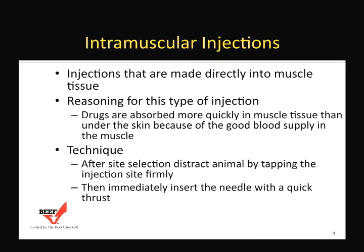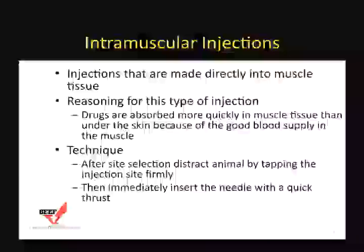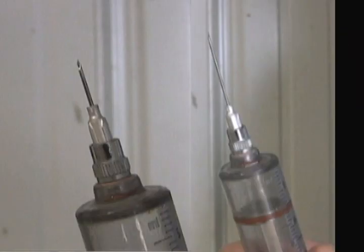The other technique is to go immediately in with the needle using a quick thrust into the muscle to deposit whatever you may be depositing — vaccine or antibiotic. Select the appropriate needle length for the type of injection you are giving. The shorter needle, five-eighths of an inch or less, is for subcutaneous injections. The longer needle, an inch and a half in length, should be utilized for intramuscular injections.